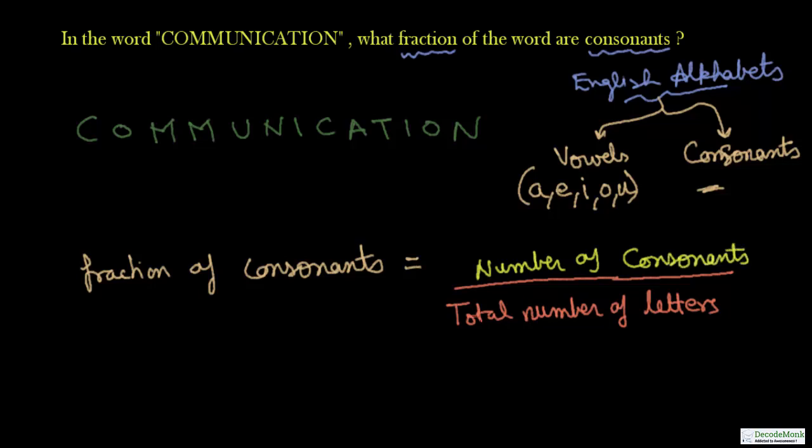So first of all, let us count total number of letters. So total number of letters will be 1, 2, 3, 4, 5, 6, 7, 8, 9, 10, 11, 12, 13. Total number of letters is going to be 13. And the total number of consonants will be the total number of letters minus the number of vowels.